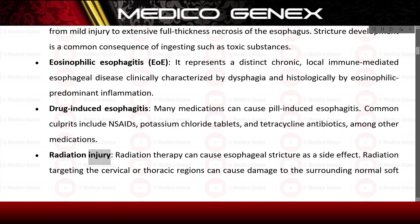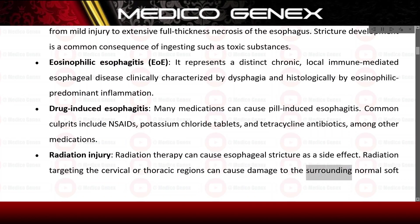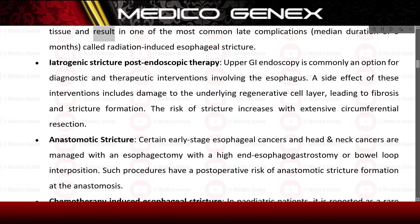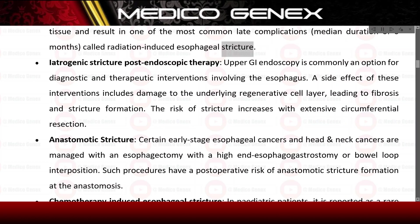Radiation injury: radiation therapy can cause esophageal stricture as a side effect. Radiation targeting the cervical or thoracic regions can cause damage to the surrounding normal soft tissue, resulting in one of the most common late complications — radiation-induced esophageal stricture — with a median duration of six months.